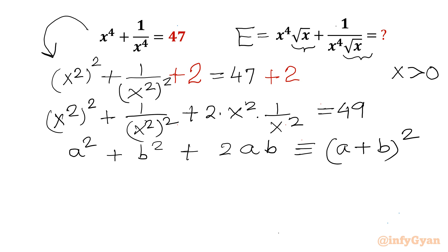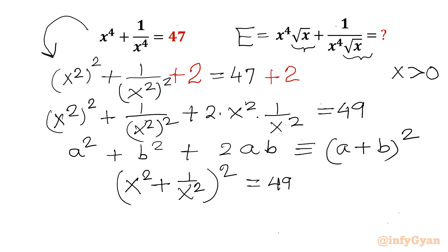So the left hand side can be written as (x² + 1/x²)² equal to 49, which is 7². Taking square root of both sides gives x² + 1/x² equal to plus or minus 7.